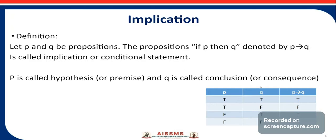Let us see the truth table for implication. If P is true and Q is true, then P implies Q is true. If P is true and Q is false, then P implies Q is false. If P is false and Q is true, then P implies Q is true. If P is false and Q is false, then P implies Q is true. So when P is true and Q is false, then P implies Q is false.